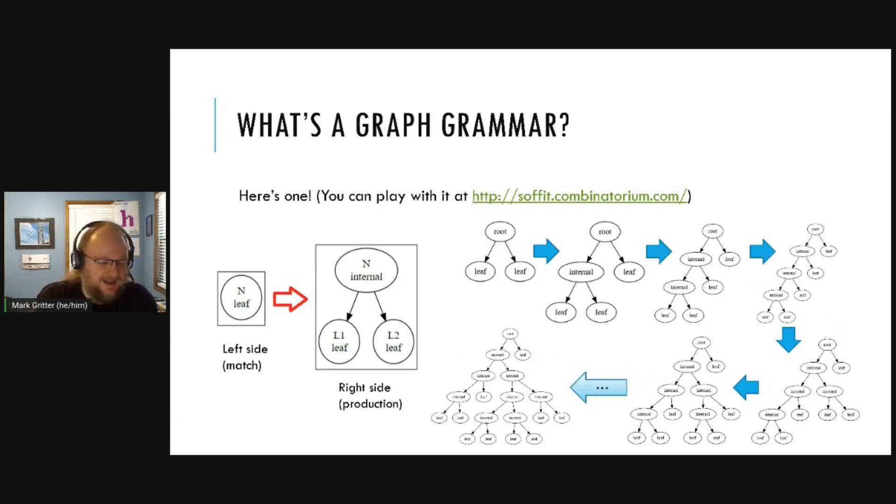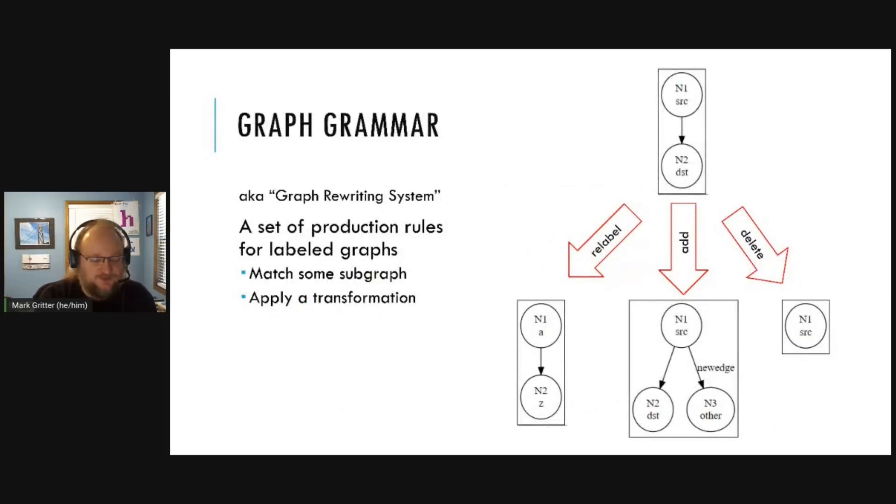And this is like a context-free grammar that operates on strings, but it's operating on graphs instead. So, more formally, a graph grammar or a graph rewriting system is a set of production rules for labeled graphs. We can relabel the nodes. We can add components. We can delete them or merge nodes.